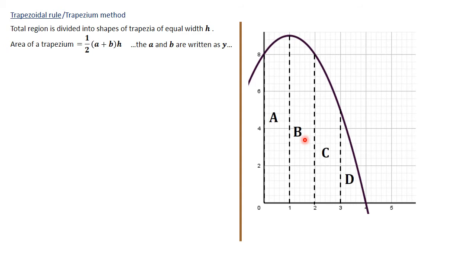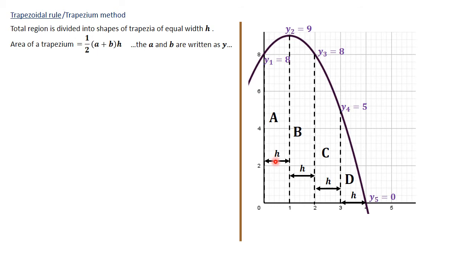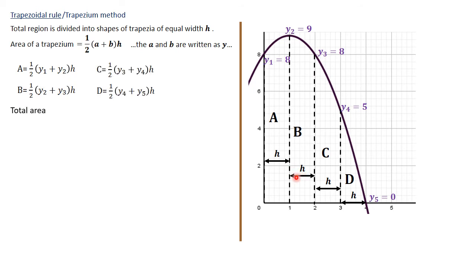We have trapezia A, B, C, and D. The heights are: y1 = 8, y2 = 9, y3 = 8, y4 = 5, and y5 = 0. The perpendicular distance between the parallel sides of each trapezium is represented by letter h, the width. The area of A is half times (y1 plus y2) times h, since y1 is parallel to y2 and h is the perpendicular distance. Area of B is half times (y2 plus y3) times h, and similarly for C and D.